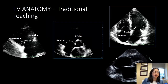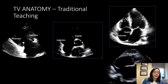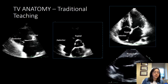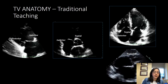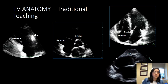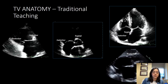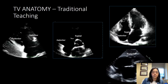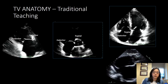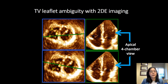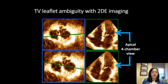How do we identify tricuspid valve anatomy? Traditionally, in the RV inflow view, the anterior and posterior leaflets were identified. In the short-axis view with the RV inflow and outflow, you've got the septal and anterior leaflet. In a four-chamber view, you're looking at the septal and anterior leaflet. In a transgastric view, you're looking at septal and posterior leaflets. However, we know that on 2D imaging, we can be wrong about how we're identifying the tricuspid valve anatomy.